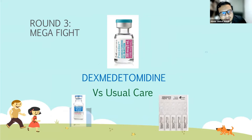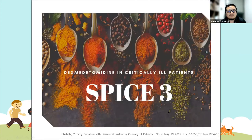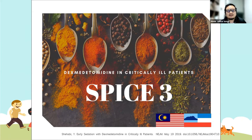Round three — the mega fight: dexmedetomidine versus usual care (clinician's choice of propofol or midazolam) in the SPICE III trial. This was a global study from Australia and New Zealand, involving multiple countries including Malaysia. Notably, Sabah Queen Elizabeth Hospital was the top recruiter in Malaysia for the SPICE III trial.